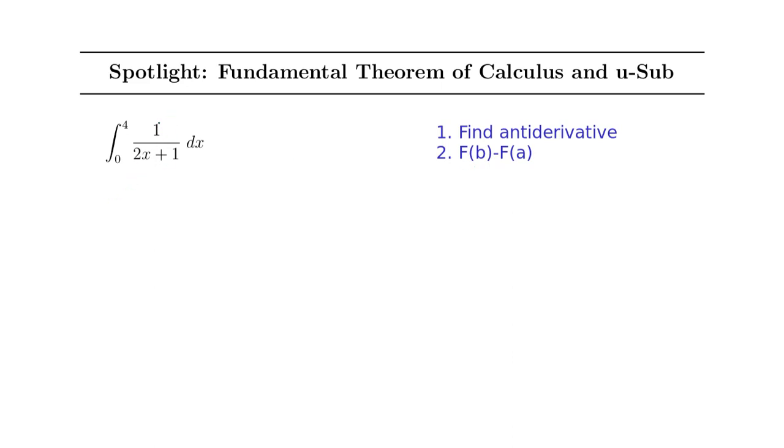So you might notice right off the bat that we've got a nice little u-substitution here, where u is going to be 2x plus 1, and du is going to be 2 dx. And you can see that this is one of those cases where we need to fix the coefficients. We have to put a 2 in here. And so to fix that, I'll put a half on the outside.